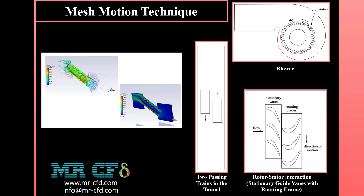When a time-accurate solution for rotor-stator interactions — rather than a time-averaged solution — is desired, you must use the sliding mesh model to compute the unsteady flow field. Most often, the unsteady solution in a sliding mesh simulation is time-periodic, repeating with a period related to the speed of the moving domains. Other transient problems include two cars or trains passing in a tunnel, or cases where rotor-stator interaction is desired and physical motion must be observed. In these cases, you must use a sliding mesh.